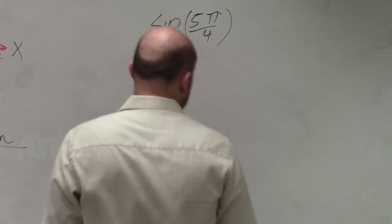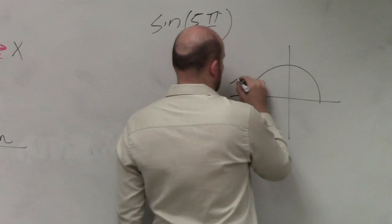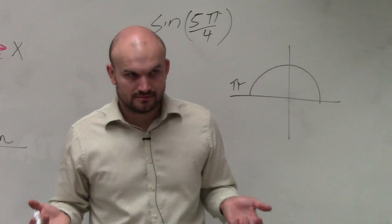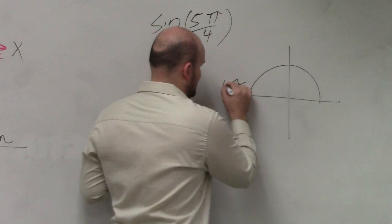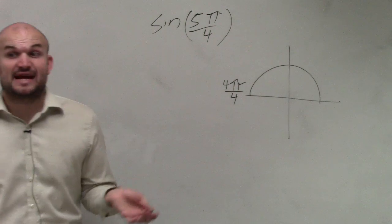So if you guys are going to look at this, we know all the way around a circle is pi. Correct? OK. You guys agree with me? That's the same thing as 4 pi over 4. Same thing. Correct?